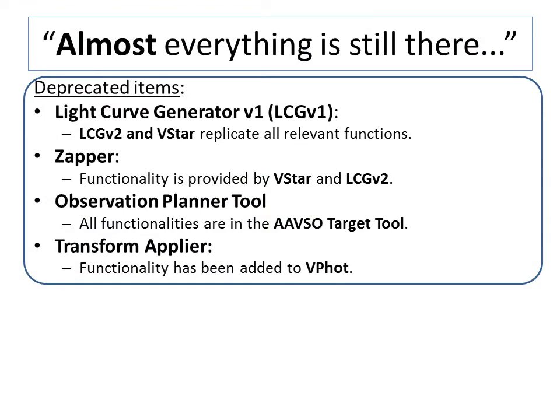At the beginning of this video, I said that almost everything from the old website is still here. In order to ensure a secure and supportable website, we have migrated from Drupal 7 to Drupal 8. A few existing tools are not compatible under Drupal 8, but we have made their functionalities part of new and more secure software. Specifically, we have been deprecating version 1 of the light curve generator — it is simply incompatible with the new infrastructure. A combination of light curve generator version 2 and VSTAR are able to replicate all relevant functions. The functionality of the Zapper tool can also be found in VSTAR and light curve generator version 2, and the original Zapper tool will not be maintained further.